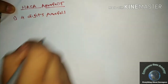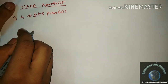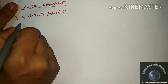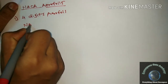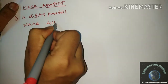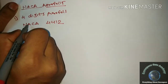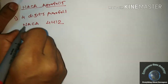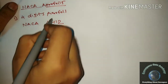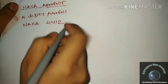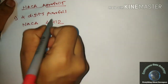So what is a four-digit airfoil? We are taking an example to explain. The first example of a four-digit airfoil is NACA 4412. In exams, they will give the number NACA 4412 and we have to find out the different aspects of the airfoil.